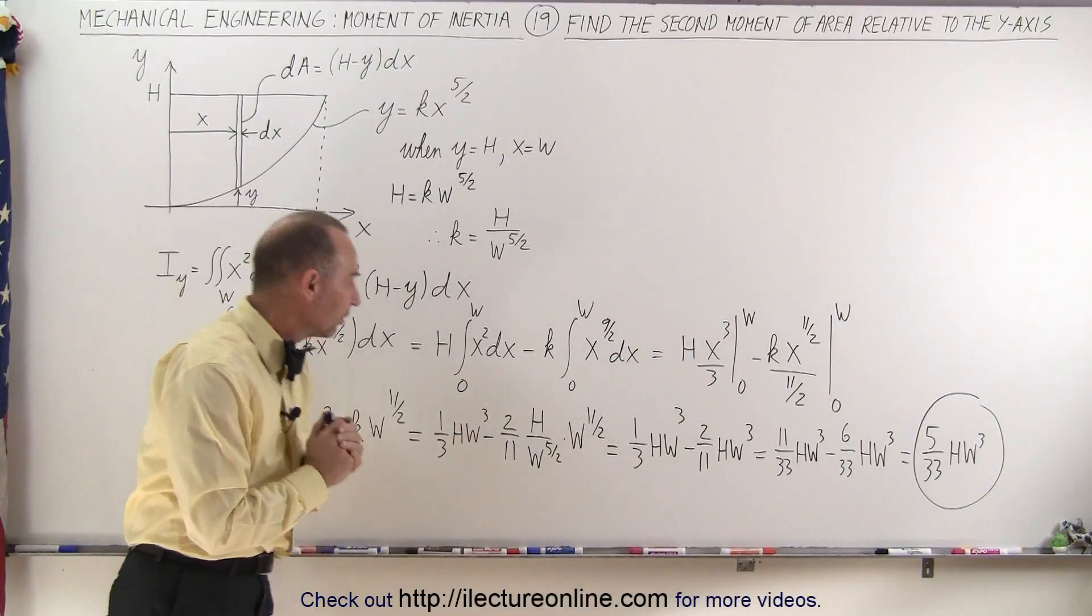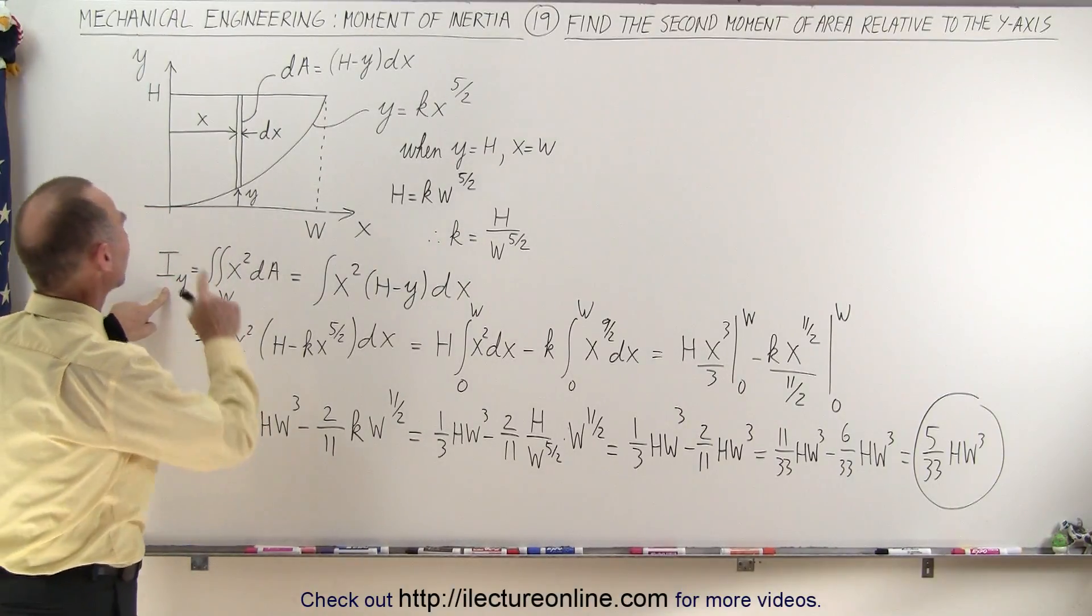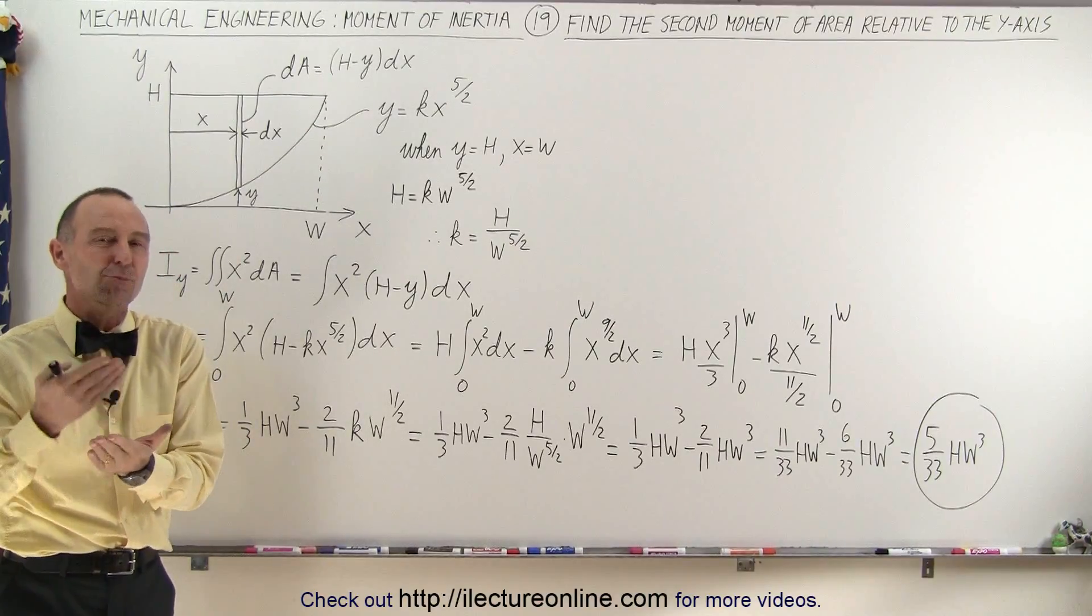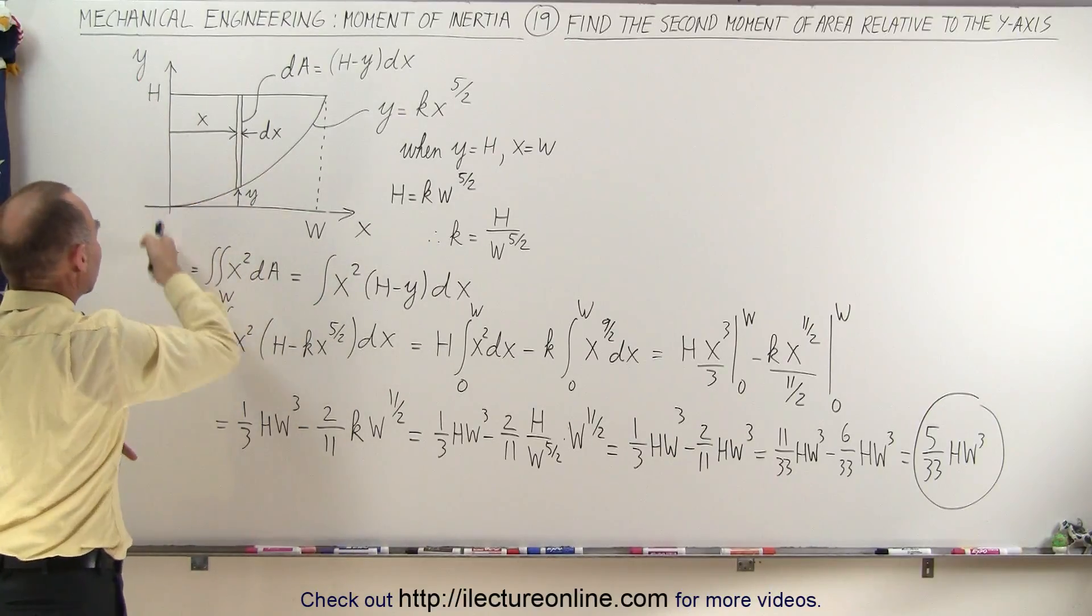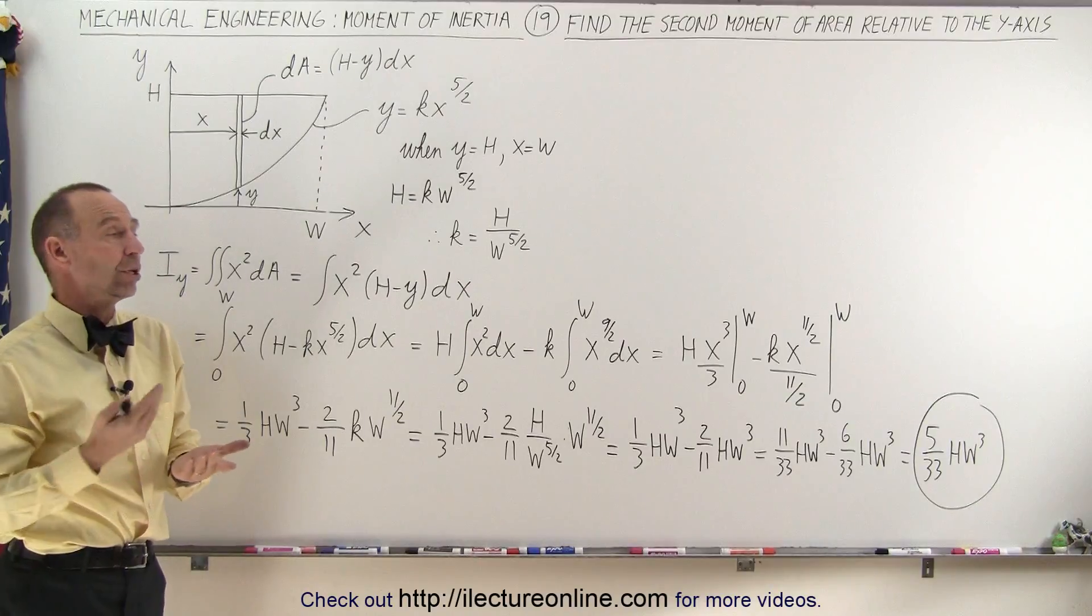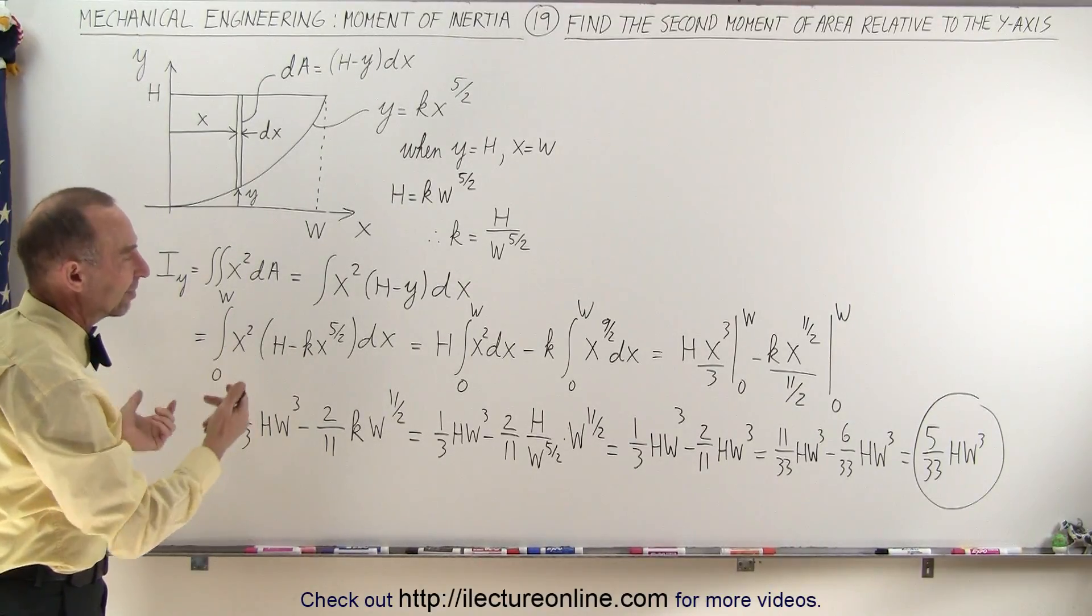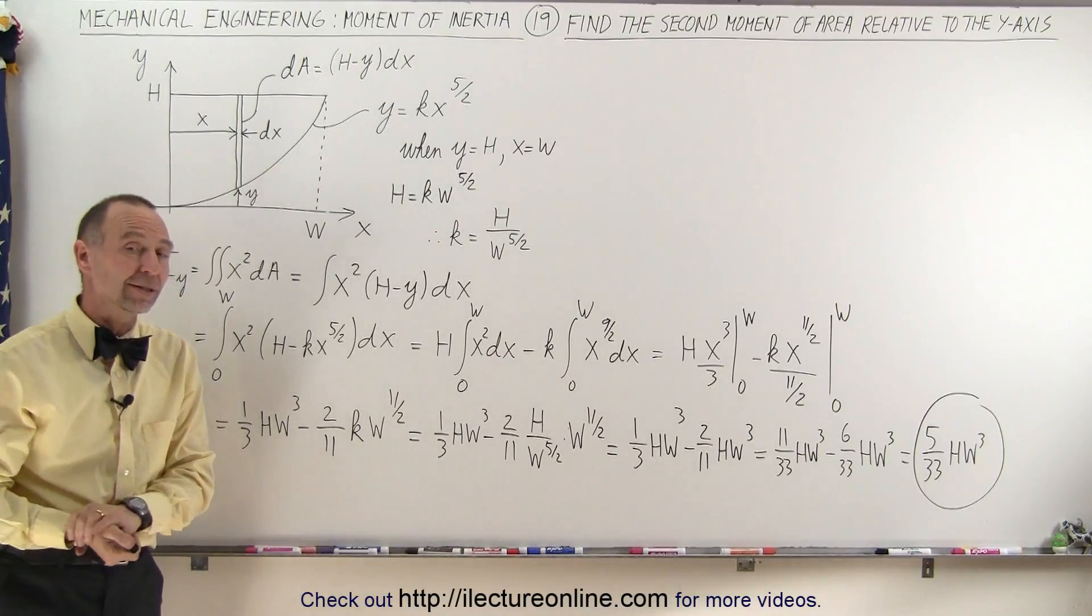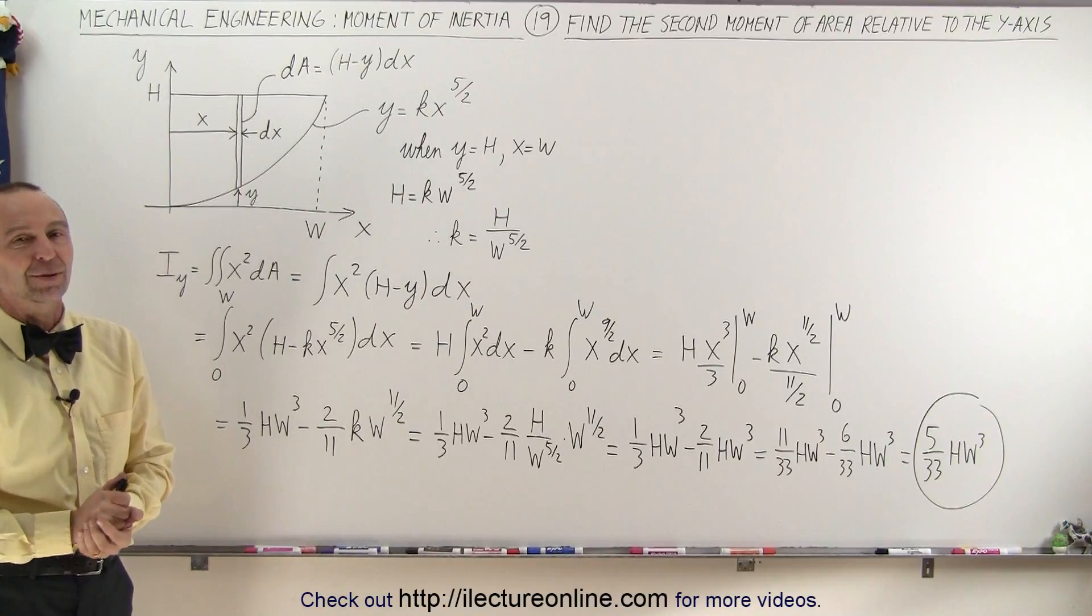So that is the result that we get when we calculate the second moment of area relative to the y-axis, which, in essence, is the same as calculating the moment of inertia of an object of that shape that would be rotating about the y-axis. You get the exact same result, except we simply ignore the mass of this particular object and the thickness, and we get the same result either way. And so using the area makes it a lot easier to calculate the moment of inertia, and that's how it's done.